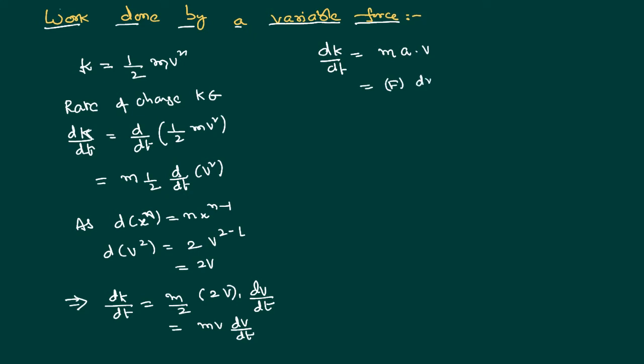We can define velocity as rate of change of displacement. Therefore, we can say rate of change of kinetic energy is equal to f into dx by dt. We can cancel dt, and we can write change in kinetic energy is equal to f into dx.